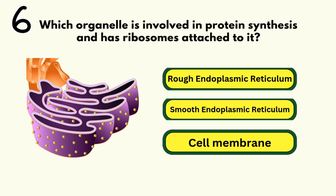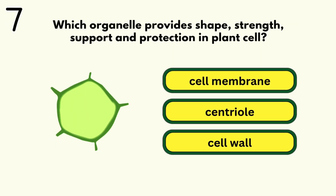Number 7. Which organelle provides shape, strength, support, and protection in plant cells? Cell wall.